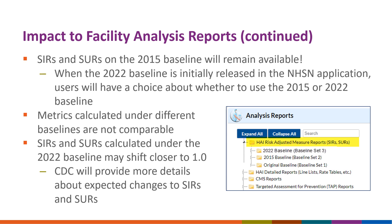The SIRs and SURs on the 2015 baseline will remain available. When the 2022 baseline is initially released in the NHSN application, users will have a choice when analyzing their SIRs or SURs about whether to use the 2015 or 2022 baseline. This is an example of what the updated analysis tree view will look like with separate folders for each baseline. It is important to note that metrics calculated under different baselines are not comparable. CDC understands that hospital SIRs and SURs calculated under the 2022 baseline may shift closer to one compared to those under the 2015 baseline, and will provide additional details about the changes users can expect.